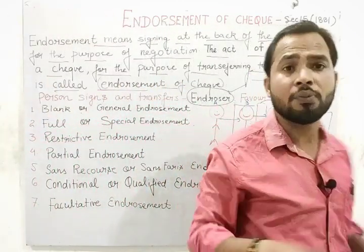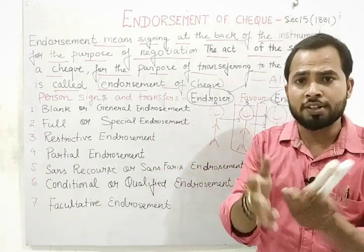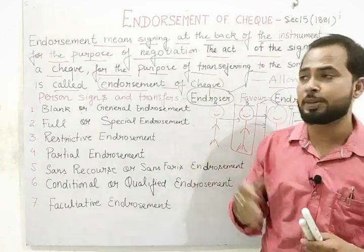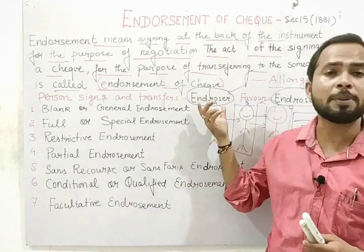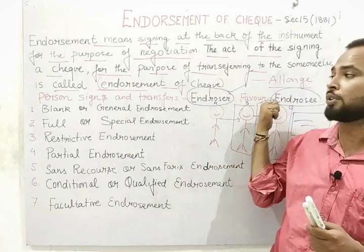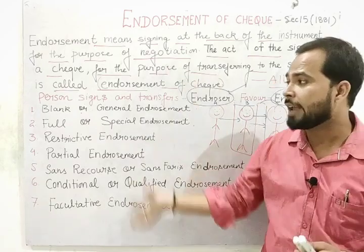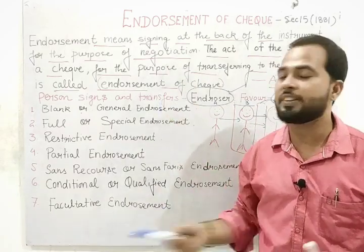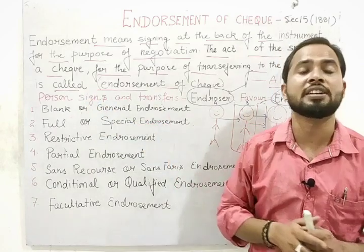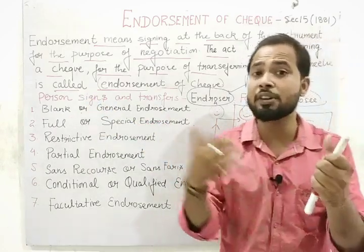So the meaning of endorsement is now clear. We have two parties: endorser and endorsee. We also understand the meaning of Allonge. Now let's move to types of endorsement — we have seven types of endorsement. The first one is blank or general endorsement.